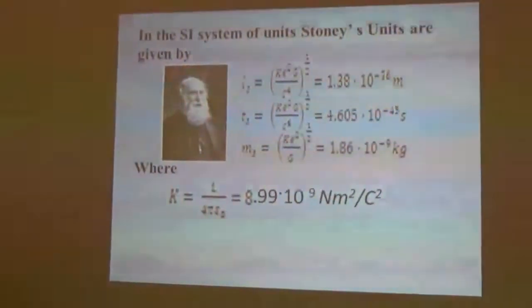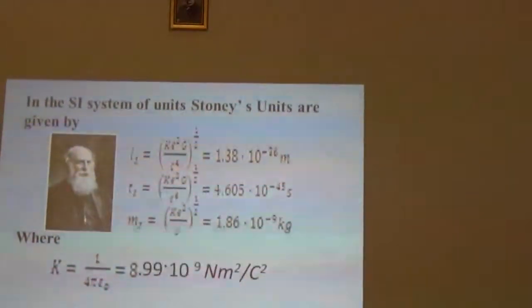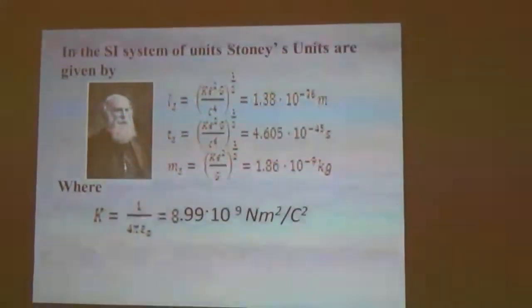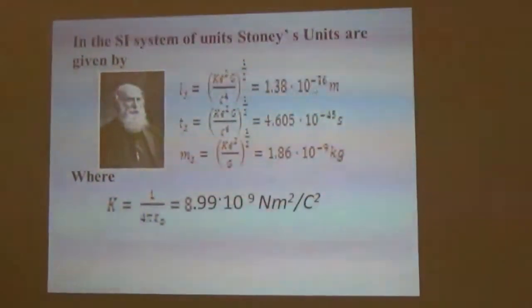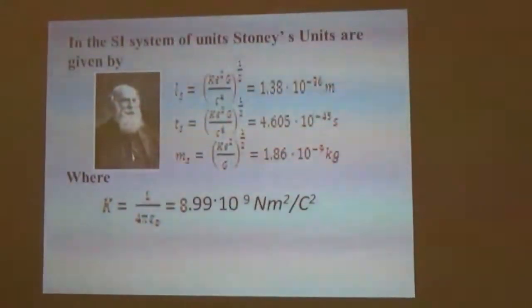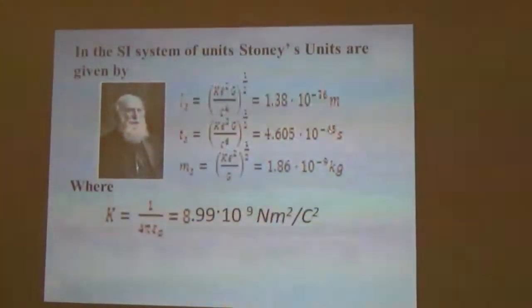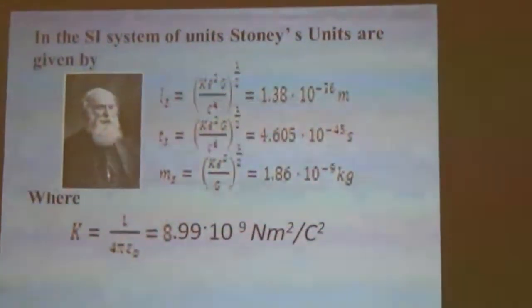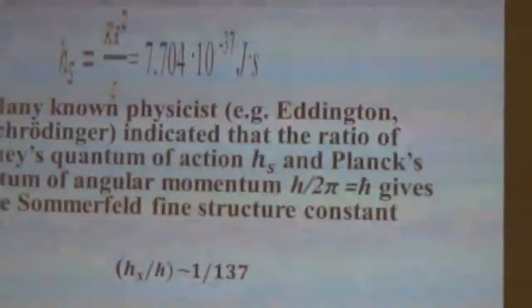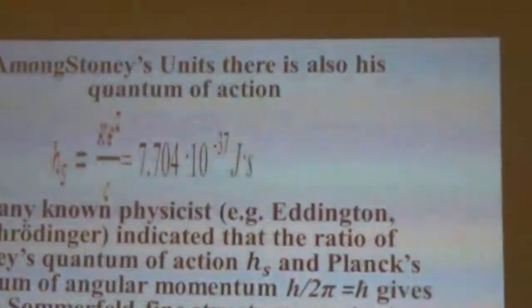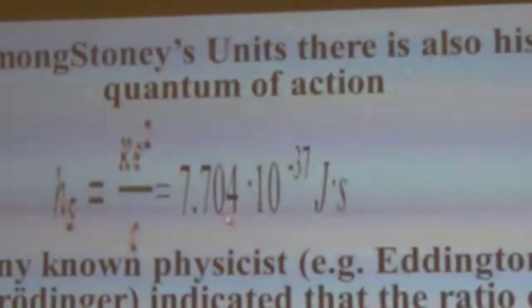In the SI system of units, Stoney's units are given by these equations. We see that these units are extremely small: the Stoney length is 10⁻⁴⁶ meters, the Stoney time is 10⁻⁴⁵ seconds, the Stoney mass is 10⁻⁹ kilograms, and the Stoney quantum of action is also very small — 10⁻³⁷.